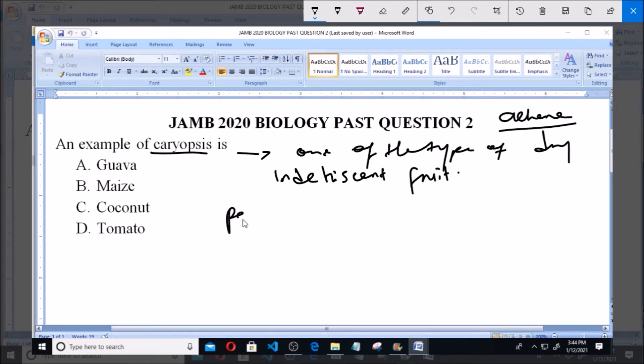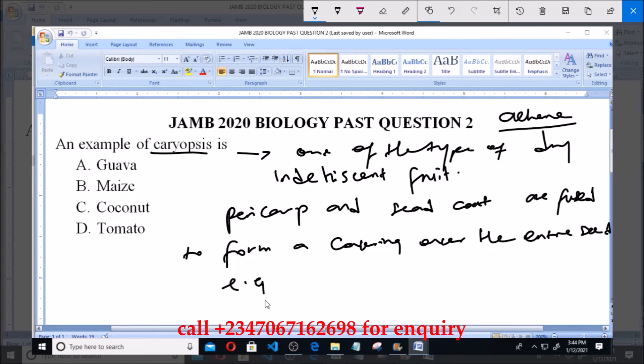Unlike the achene, the pericarp and seed coat of caryopsis are fused together to form a covering over the entire seed. And a typical example of the caryopsis include the rice grain and the maize grain, because the pericarp fuses with the seed coat.